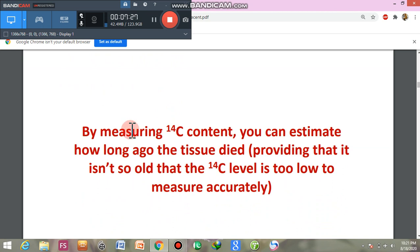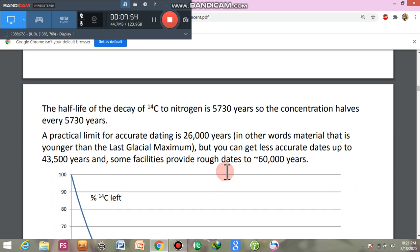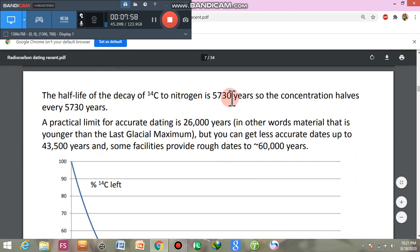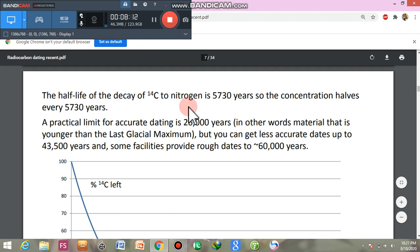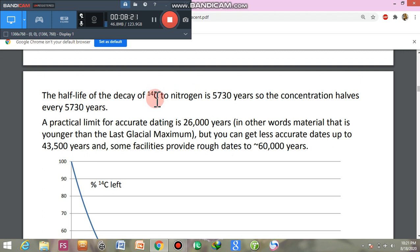By measuring carbon-14 content, you can estimate how long ago the tissue died. When carbon-14 content is measured, you can see how long the tissue has been dead. Providing that it is not too old, if carbon-14 level is too low, it means that the tissue is very old, which means carbon-14's degradation is very advanced. The half-life of decay is 5,730 years. The carbon-14 degradation time period is 5,730 years. Suppose if you have 10 grams of carbon-14, after 5,730 years you have 5 grams, meaning half degradation has occurred.